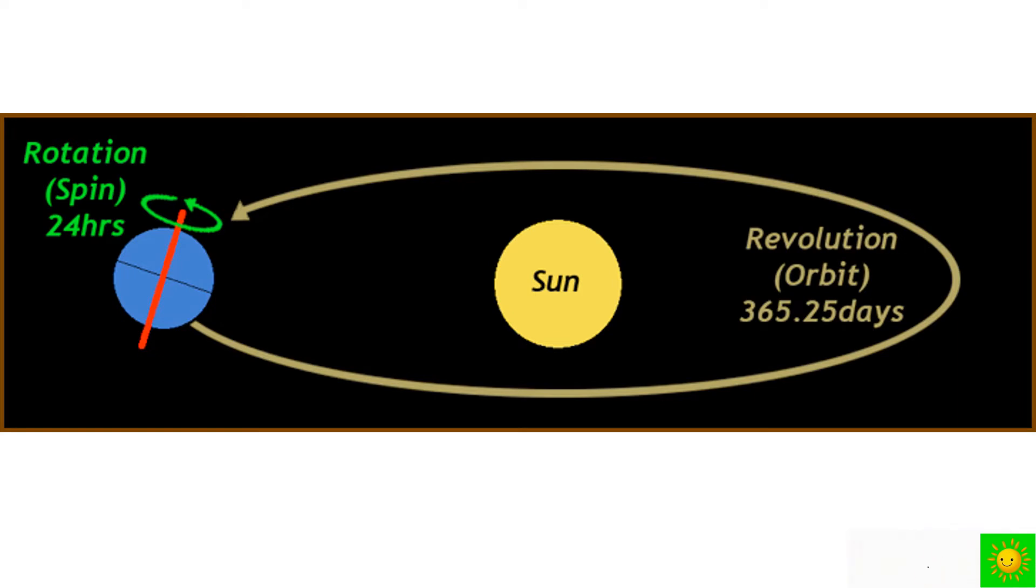Planets rotate around their own axis while revolving around the Sun. The rotational time of a planet is the time taken by the planet to turn once around its own axis. It is the time span of a day of the particular planet. Let's see an example: the rotational time of the Earth is 24 hours, so that is a day of the Earth.